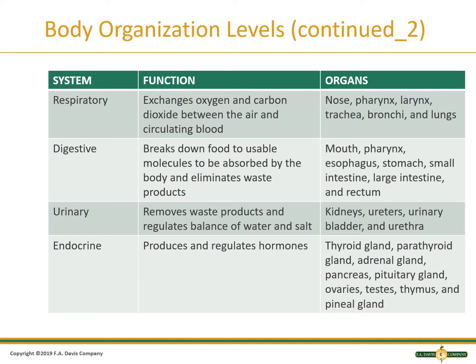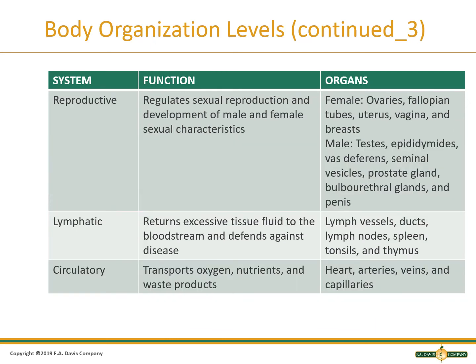The endocrine system produces and regulates hormones. Its organs include the thyroid gland, parathyroid gland, adrenal gland, pancreas, pituitary gland, ovaries, testes, thymus, and pineal gland. The reproductive system regulates sexual reproduction and development of male and female sexual characteristics. In females, the organs include ovaries, fallopian tubes, uterus, vagina, and breasts. In males, the organs include the testes, epididymis, vas deferens, seminal vesicles, prostate gland, bulbourethral gland, and penis. The lymphatic system functions to return excessive tissue fluid to the bloodstream and defends against disease. Its organs include lymph vessels, ducts, lymph nodes, spleen, tonsils, and thymus.